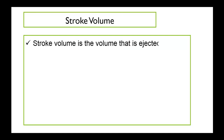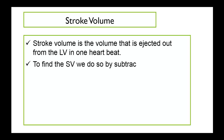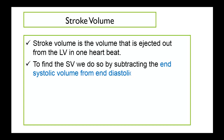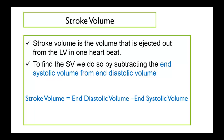Stroke volume is the volume that is ejected out from the left ventricle in one heartbeat. To calculate the stroke volume, we subtract the end-systolic volume from the end-diastolic volume. In our case, we have an end-diastolic volume of 120 milliliters and an end-systolic volume of 50 milliliters, so the stroke volume is 70 milliliters of blood.